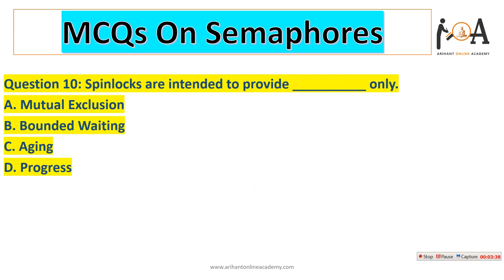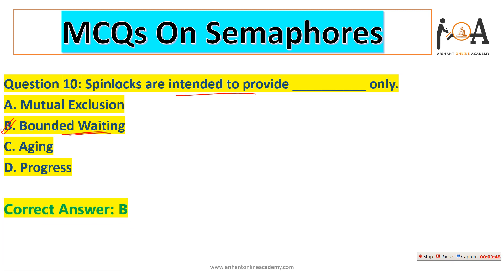The next question: what are spin locks intended to provide? Spin locks are intended to provide bounded waiting so that other processes can also execute at a particular time. So option B is the correct answer.